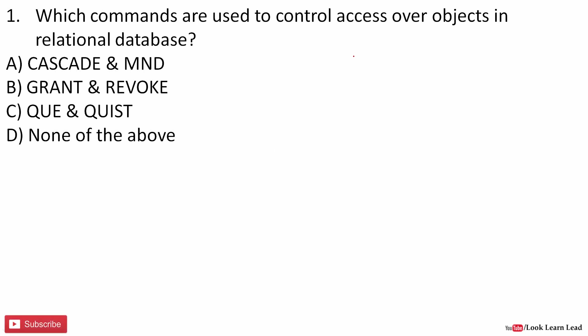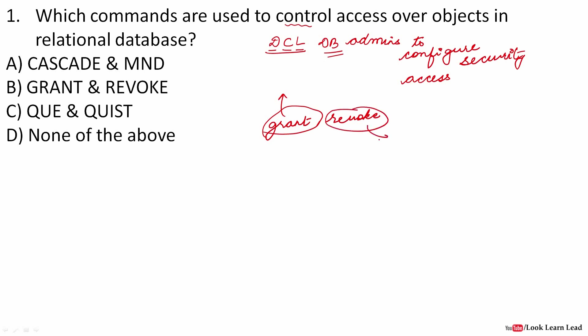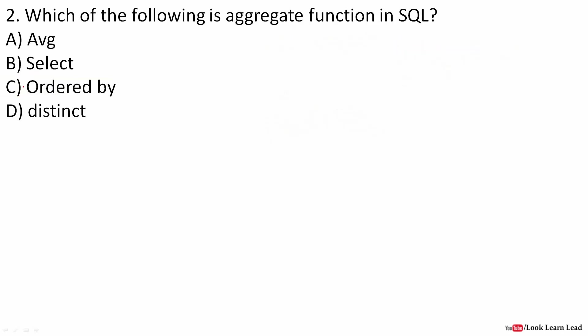Which commands are used to control access over objects in relational databases? For controlling access we have a language called DCL, that is Data Control Language, which allows the database administrators to configure security access. It uses two commands: GRANT and REVOKE. Grant is used to provide permission to give access and revoke is used to remove the access. So the answer is B, that is grant and revoke.